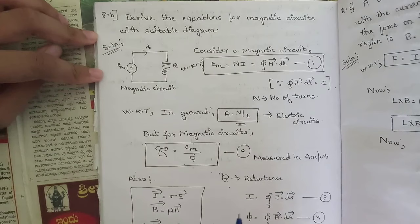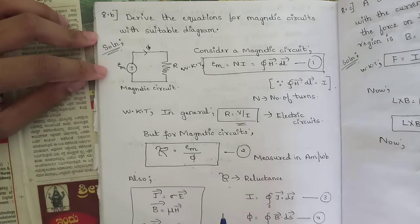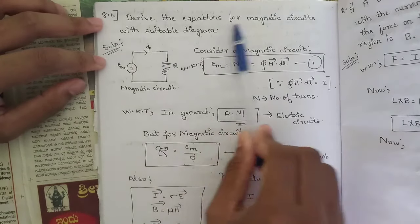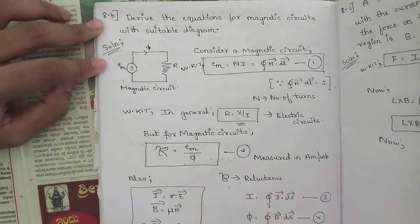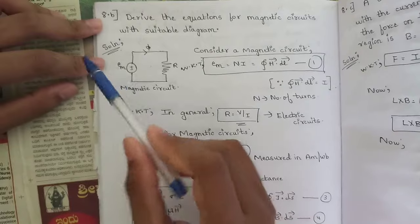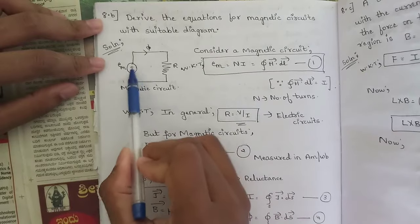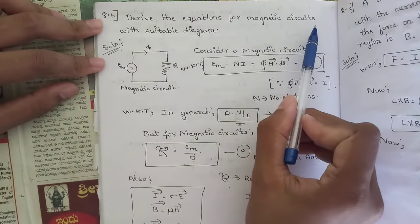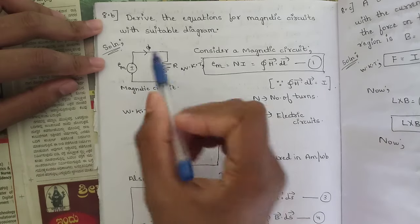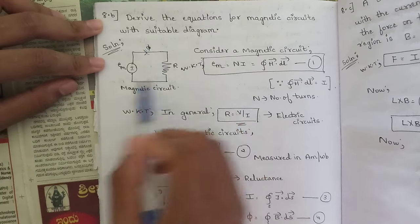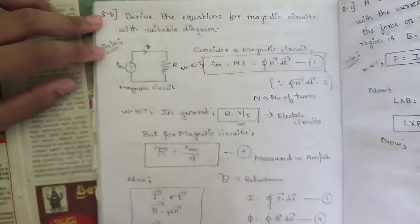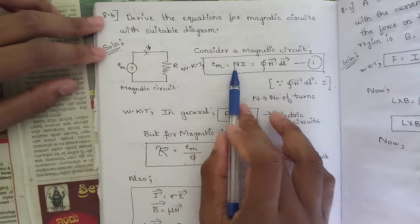Here is one more important question from the model paper, question number 8: derive the equations for magnetic circuits with a suitable diagram. Draw one diagram where the voltage source, in terms of magnetic circuit, is represented as EM, and here is the flux flowing through this magnetic circuit along with the resistance. Consider a magnetic circuit: EM is equal to N times I.